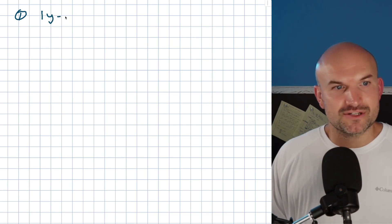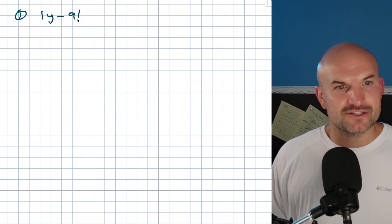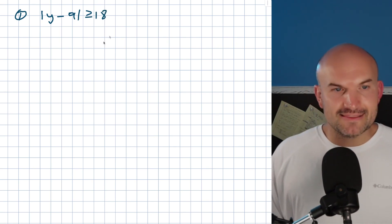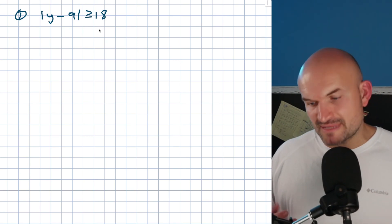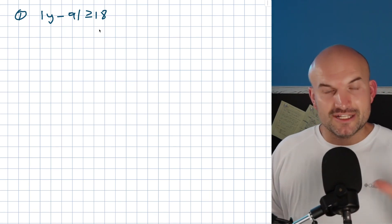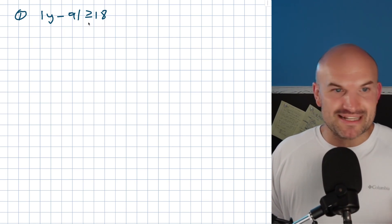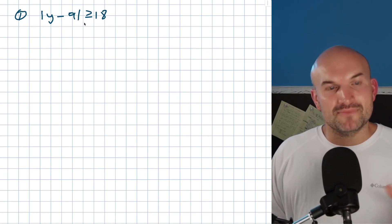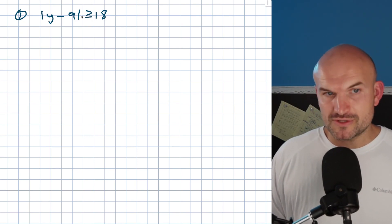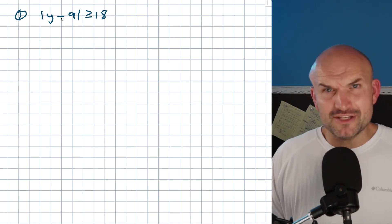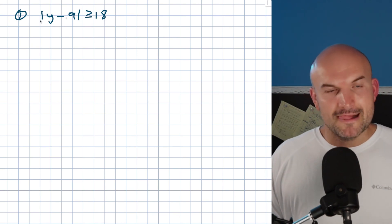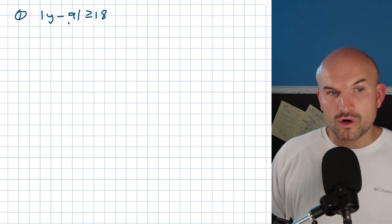The first example: the absolute value of y minus nine is greater than or equal to 18. The main thing I want ingrained in you — I don't want you memorizing rules. I want you doing enough practice problems that rewriting these as compound inequalities becomes second nature. Whenever you have the greater than or equal to symbol, this is going to create an 'or' situation.